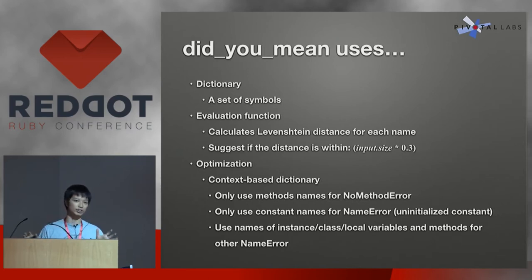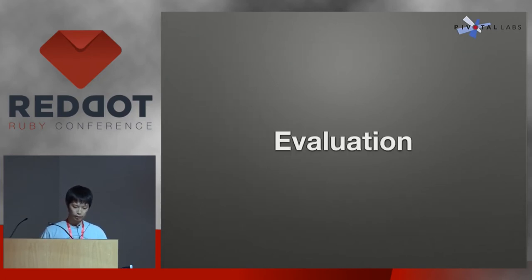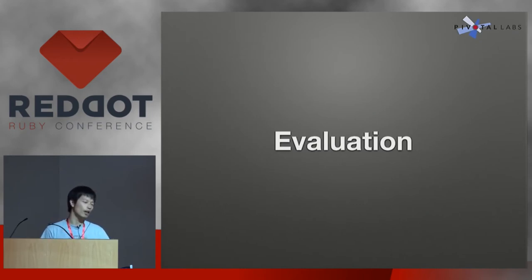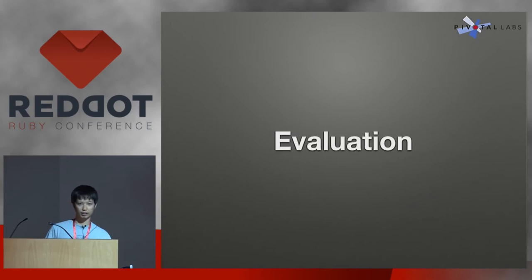So this is how DidYouMean gem works. This is actually how the latest version works, and it's different from the one that is available on GitHub. Now we know how it works. But we don't know how accurate it is, because sometimes it doesn't suggest, and sometimes it suggests too many methods. We want to know how accurate it is.